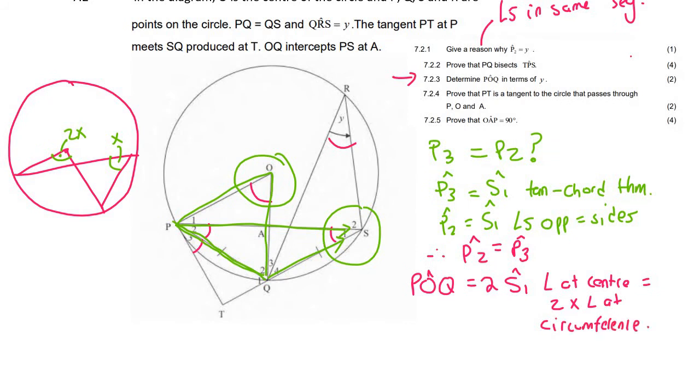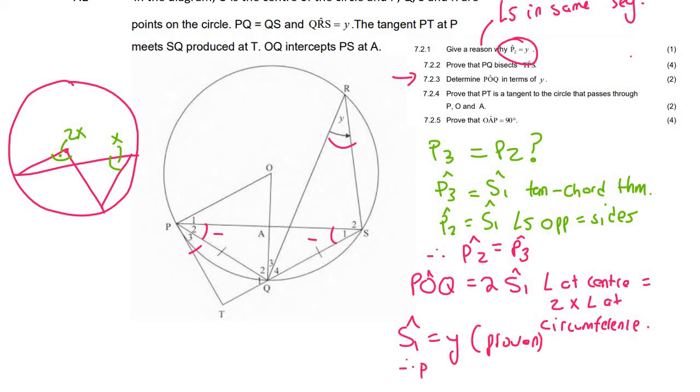Okay, but now we also know that S1 is equal to Y. Because remember, we said earlier that P2 is equal to Y. We proved that there. But P2 is the same as S1. So we can say here proven, and therefore we can say that angle POQ is going to be two times S1, so it'll be 2Y. 2Y is the answer for that one.